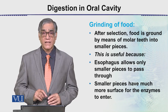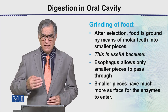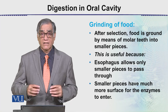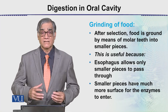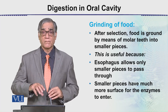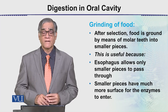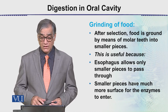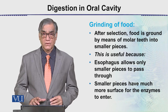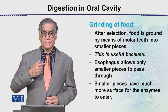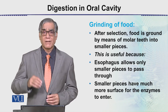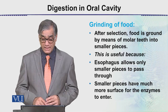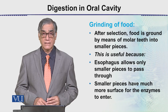There are two reasons for grinding: first, so that it can be easily engulfed and pass through the pharynx, and second, its surface area increases so that enzymes have more surface to penetrate and digest the particle or chunk into its components. After selection, food is ground by means of molar teeth into smaller pieces. This is useful because the esophagus — the tube through which food passes down into the stomach — allows only smaller pieces to pass through, and smaller pieces have much more surface area for the enzymes to work on.